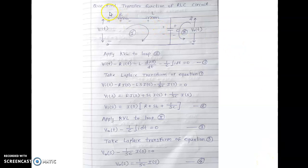So, to find the transfer function of the RLC circuit: in this circuit we can see the resistor, inductor, and capacitor are connected. V(t) is the input voltage applied to the circuit, and Vout is the output voltage we are measuring across the capacitor C.